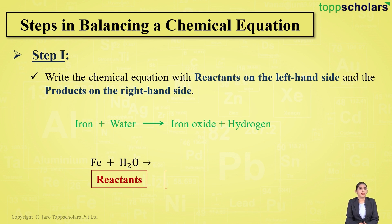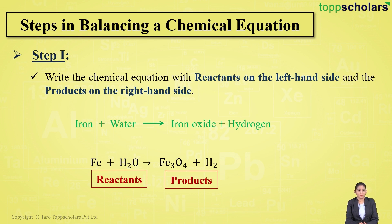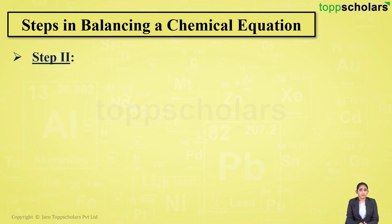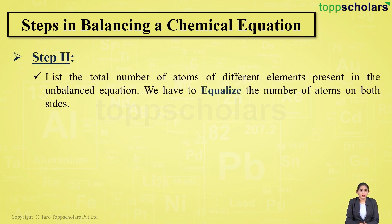The products — iron oxide and hydrogen — are written on the right-hand side. So we have reactants on the left-hand side and products on the right-hand side with an arrow between them. Step number two is to list the total number of atoms of different elements present in the unbalanced equation.